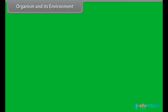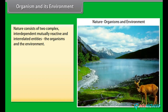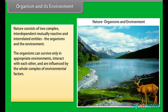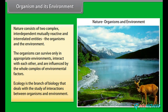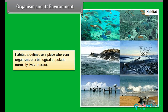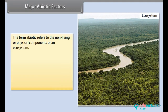Organism and its environment: Nature consists of two complex interdependent, mutually reactive and interrelated entities — the organisms and the environment. Organisms can survive only in appropriate environments, interact with each other, and are influenced by the whole complex of environmental factors. Ecology is the branch of biology that deals with the study of interactions between organisms and environment. A biome is a major ecological community of organisms adapted to a particular climatic or environmental condition on a large geographic area. Habitat is defined as a place where an organism or a biological population normally lives or occurs.